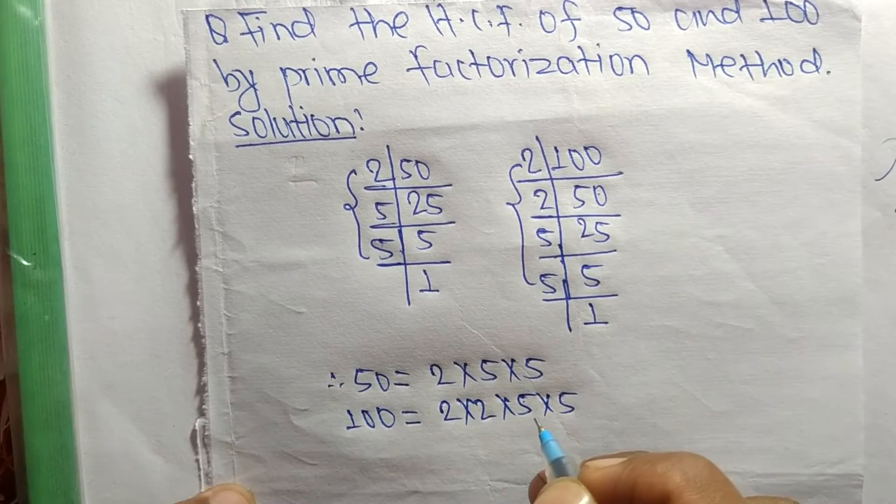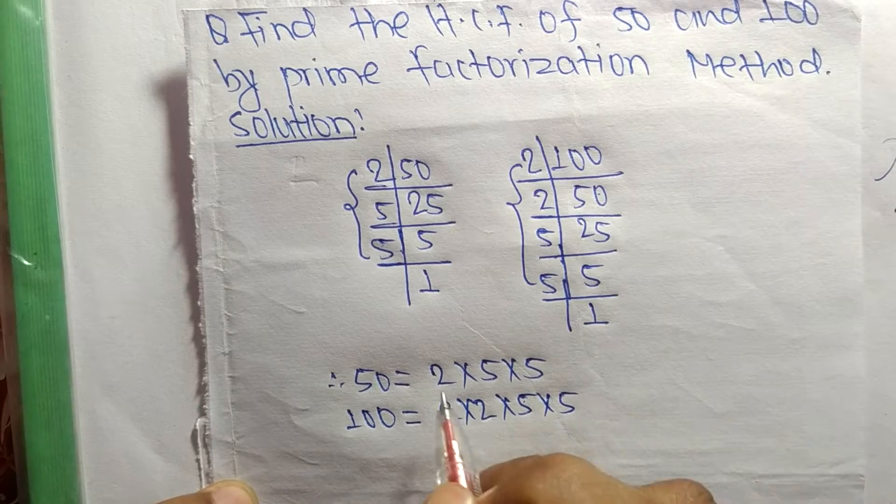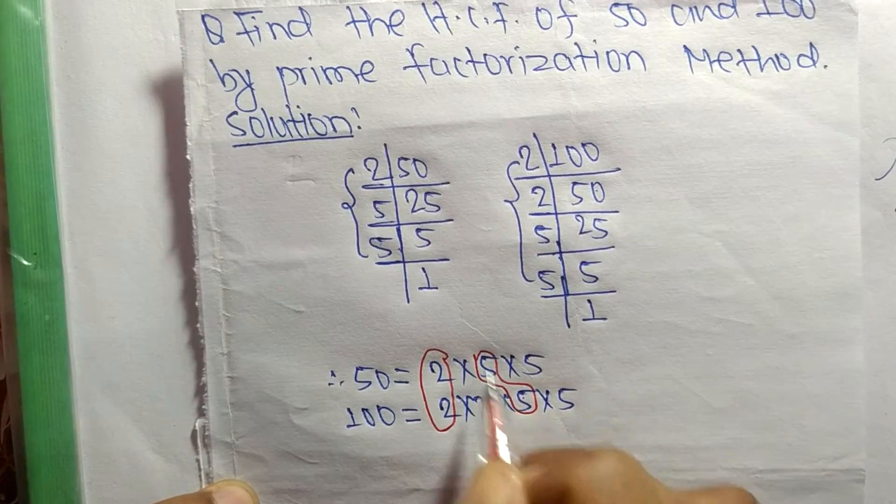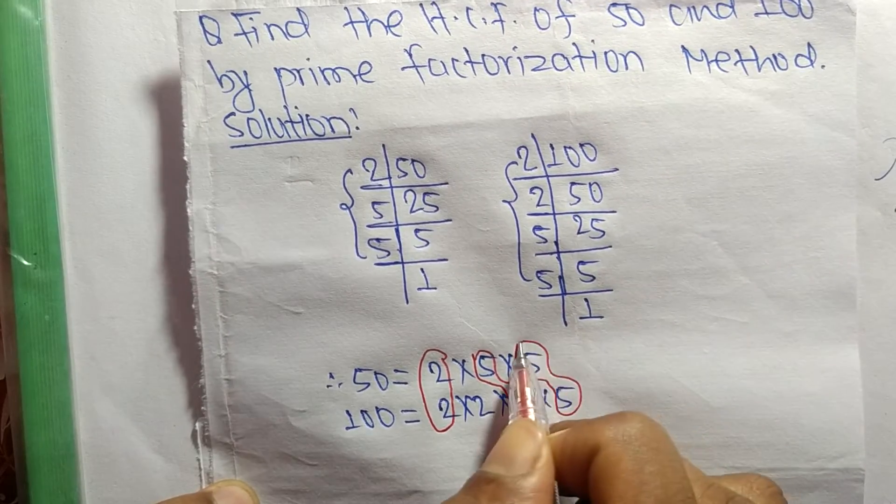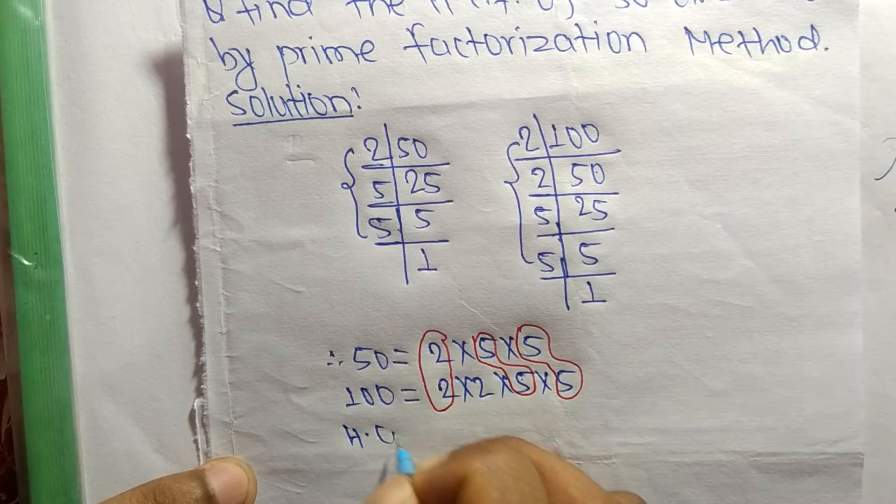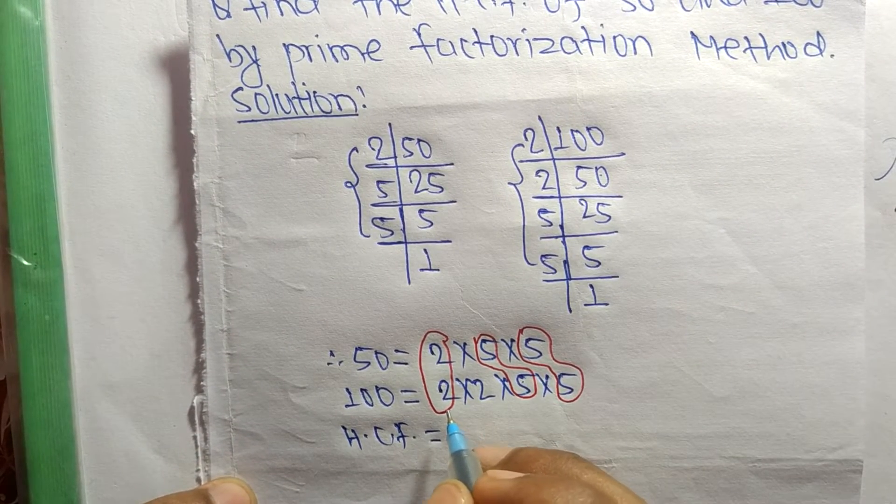Now we select the common factors in these prime factorizations. The first common factor is 2, the second is 5, and the third is also 5. The HCF equals the product of common factors.